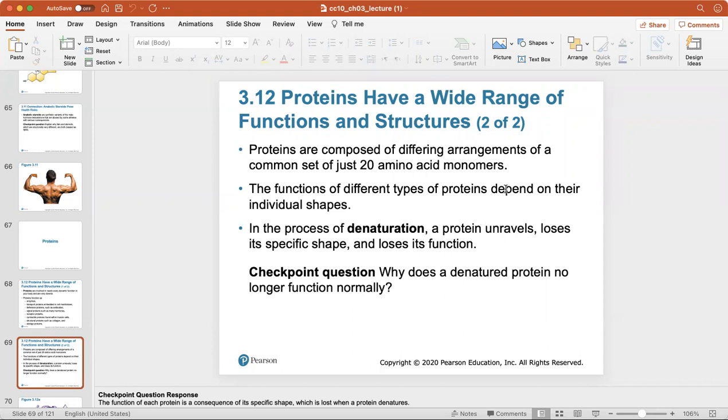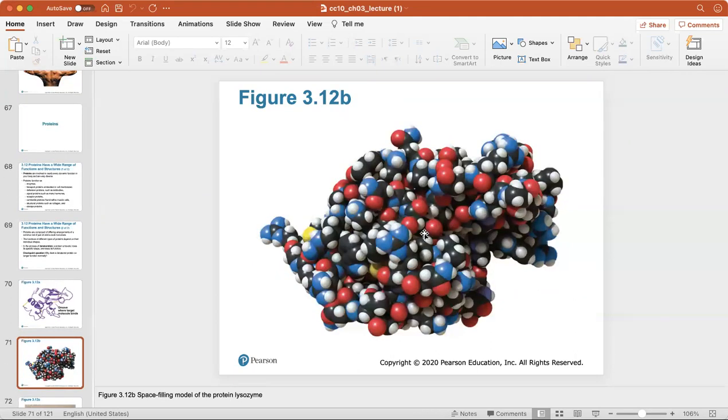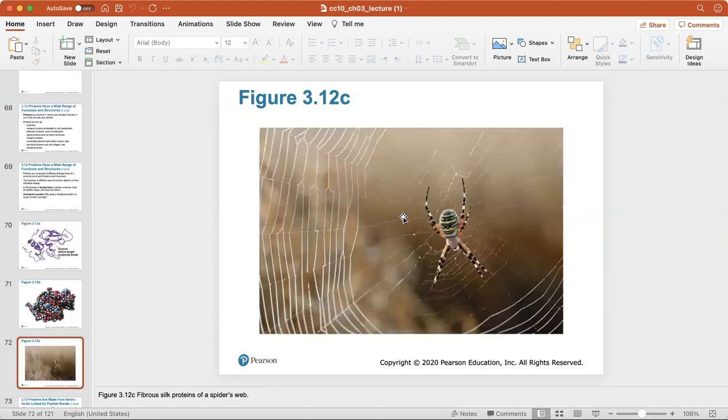Shapes of proteins are incredibly important because they have specific grooves where the target molecule binds. Without the specific protein shape, the target molecule will be unable to bind to it. Here's a space filling model of the protein lysozyme showing all the different atoms that are represented. Here's the fibrous silk protein of a spider's web, which is kind of cool to see. The spider web is made of protein.